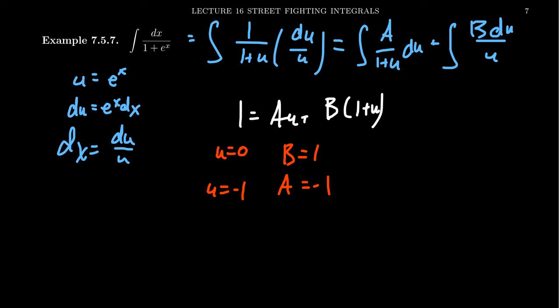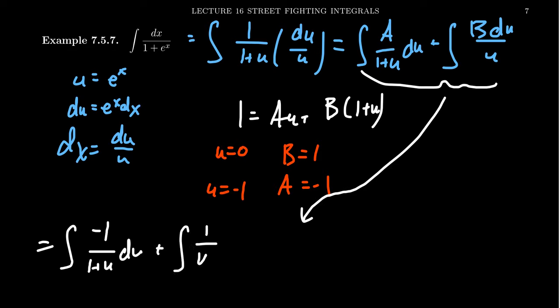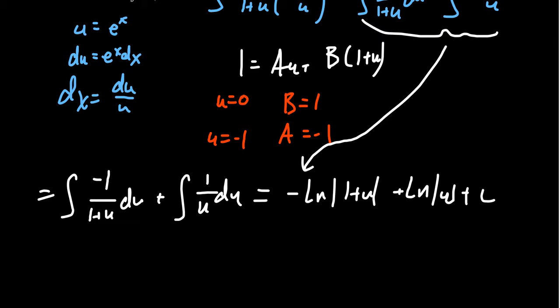So coming back to this part right here, bring that down, we have the integral of negative 1 over 1 plus u du, and then we have the integral of 1 over u du. We then get negative the natural log of the absolute value of 1 plus u plus the natural log of the absolute value of u plus a constant. We could put those things together. We would get the natural log of the absolute value of u over 1 plus u, like so, plus a constant.